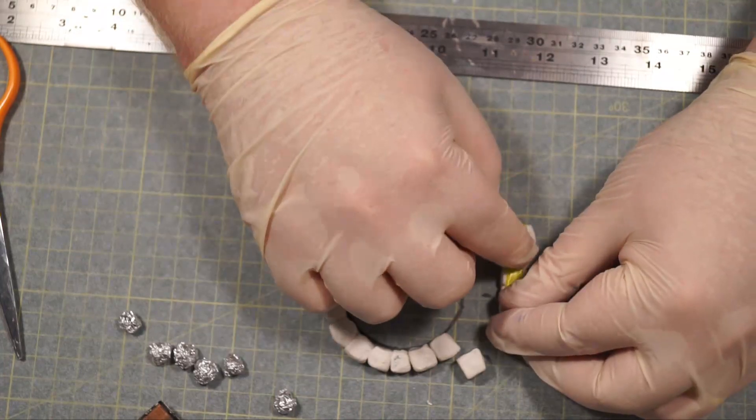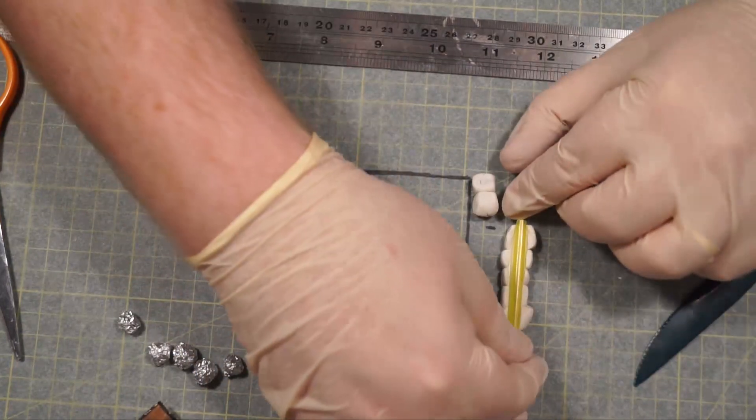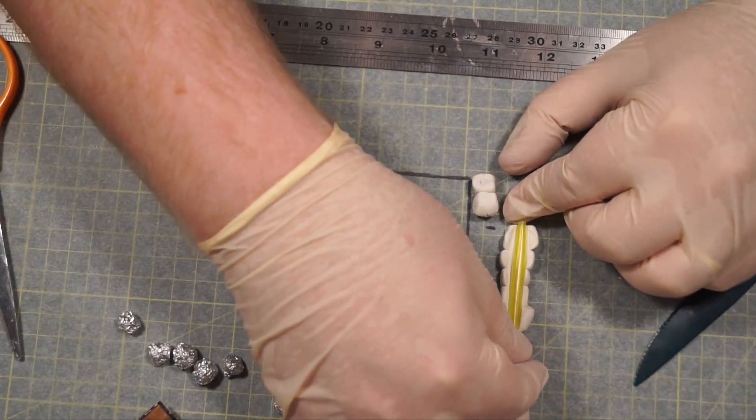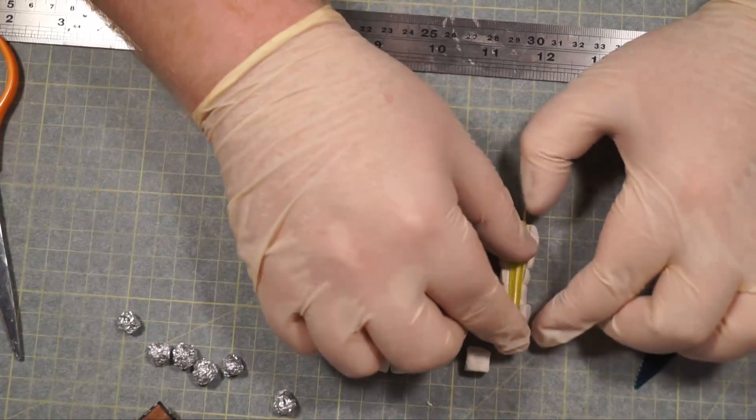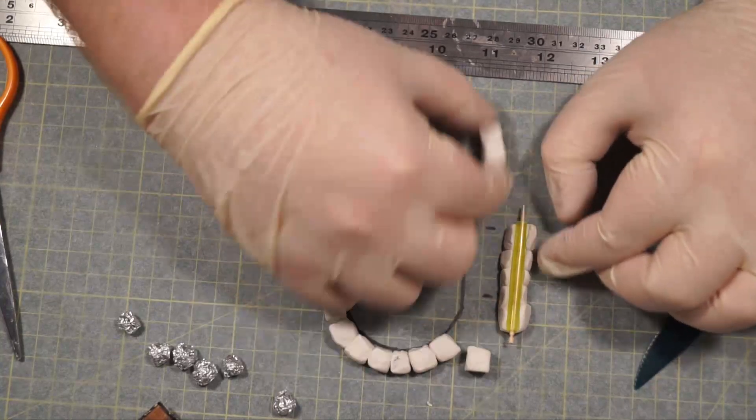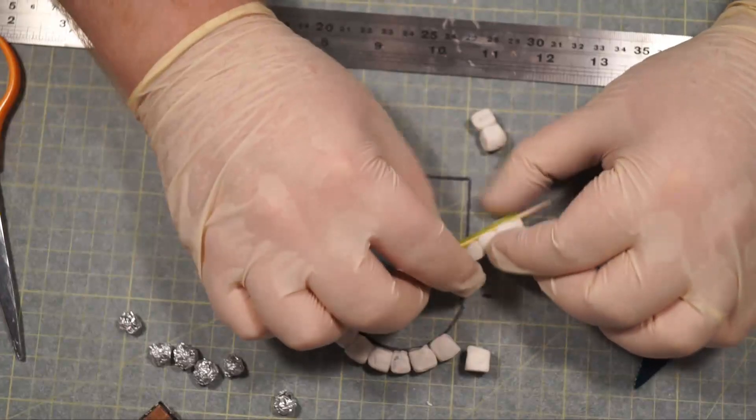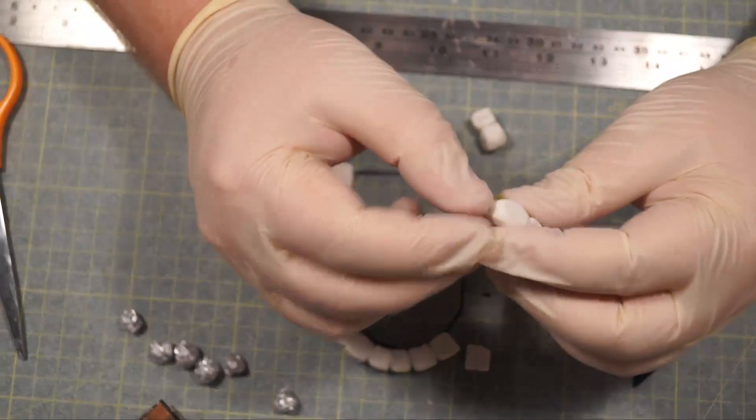And then what we're going to do is take the straw and push it into there. I'm going to also grab a matchstick here, put it through the straw. Sorry, not a matchstick, a toothpick. And then push down on that so that it goes deeper into the faux bricks that I'm creating here out of the clay.